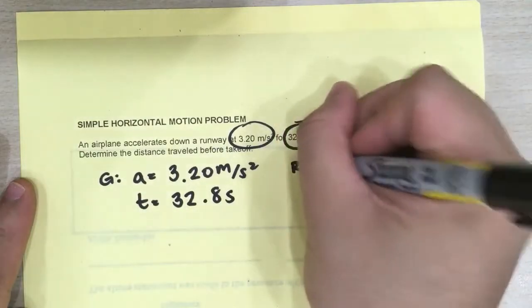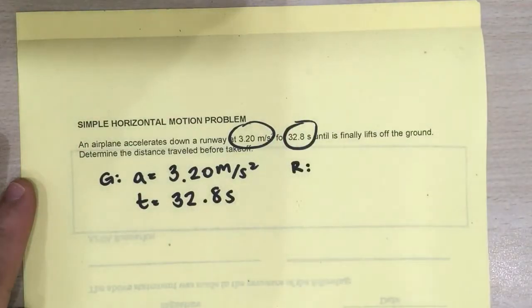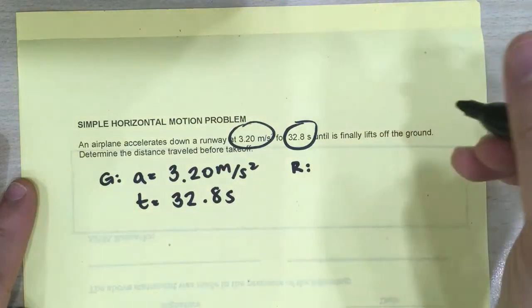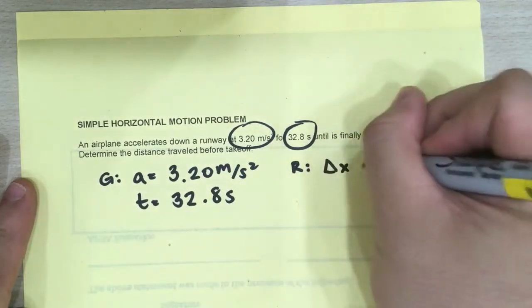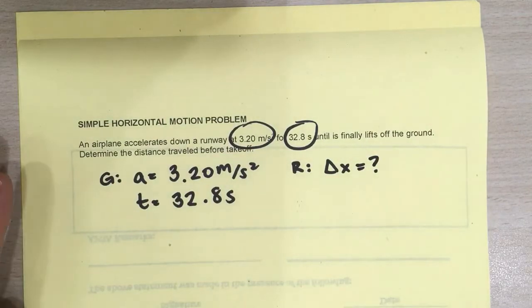And we're being asked, or it means required, we're being asked to determine the distance traveled by the aircraft before it takes off. So we're looking for delta X displacement. Okay, now it seems like there's something missing here.